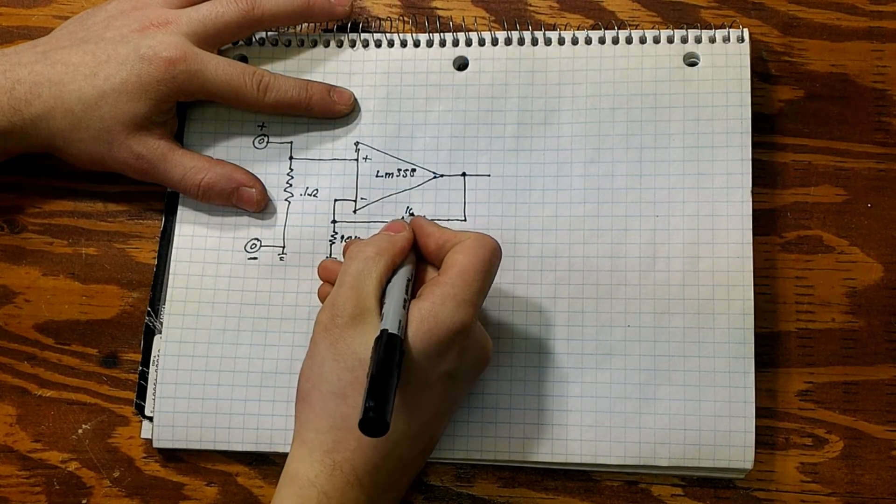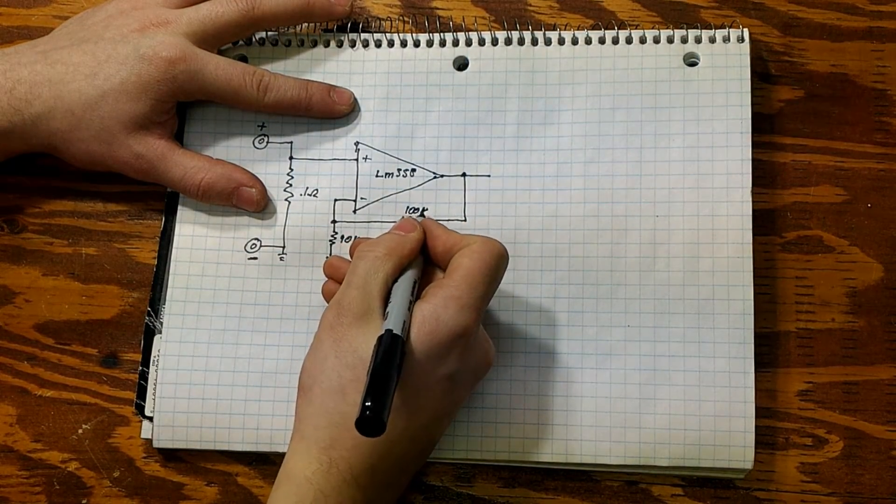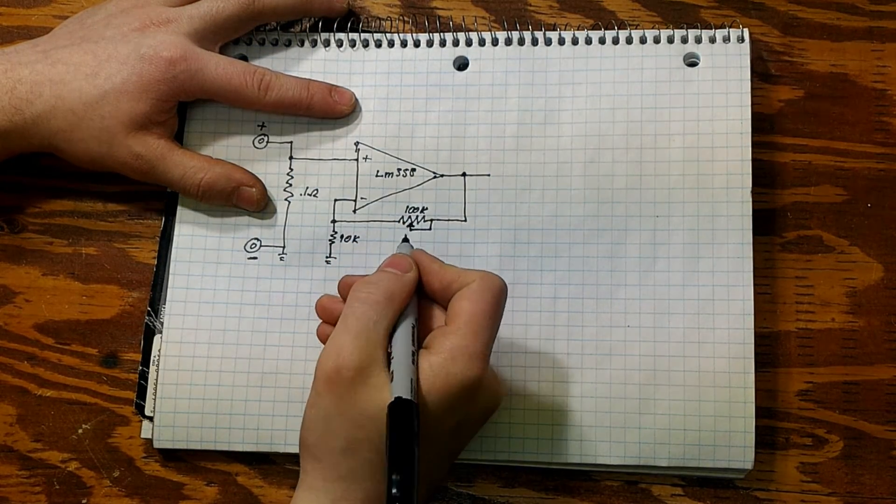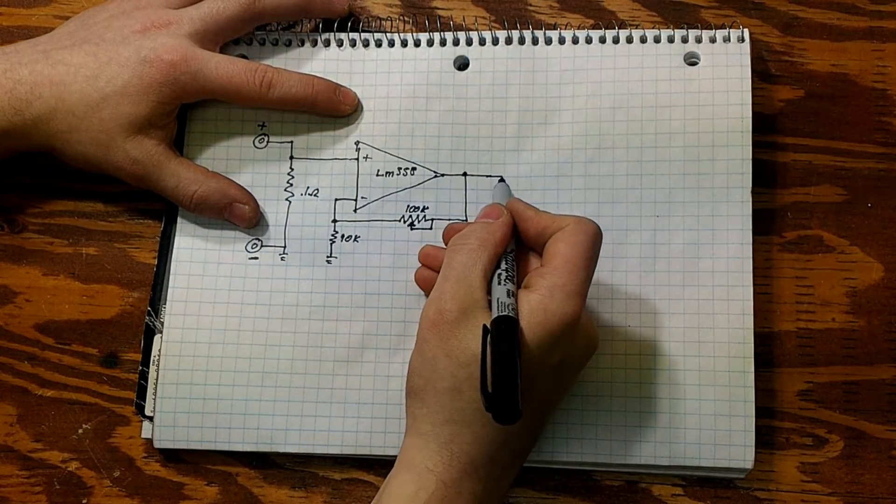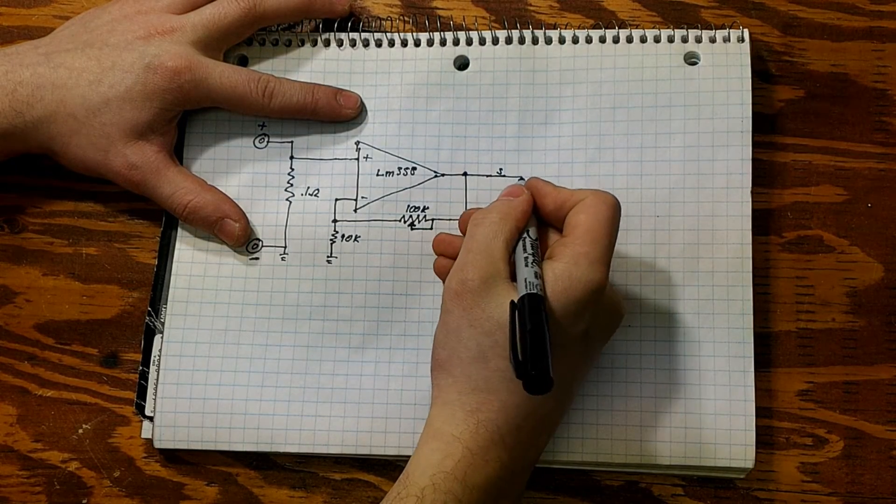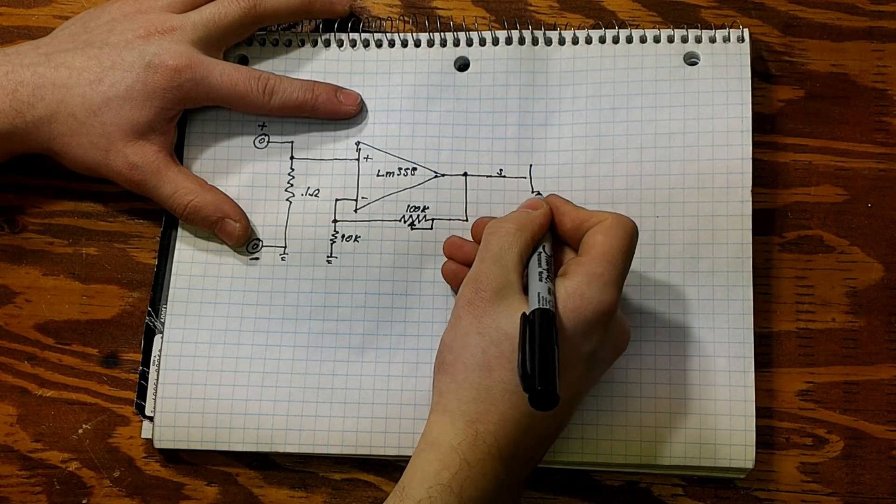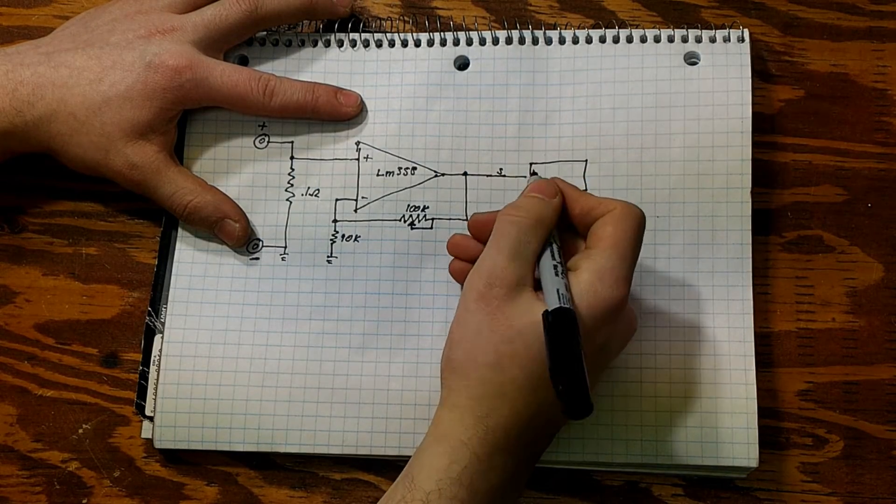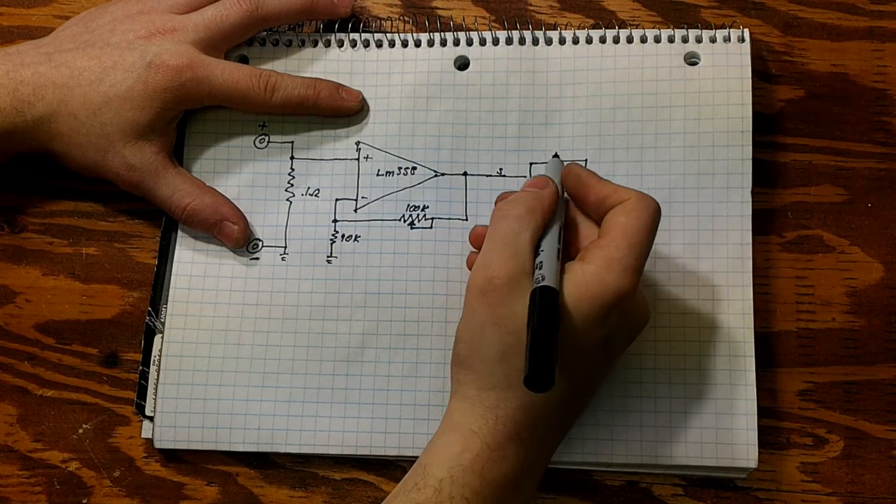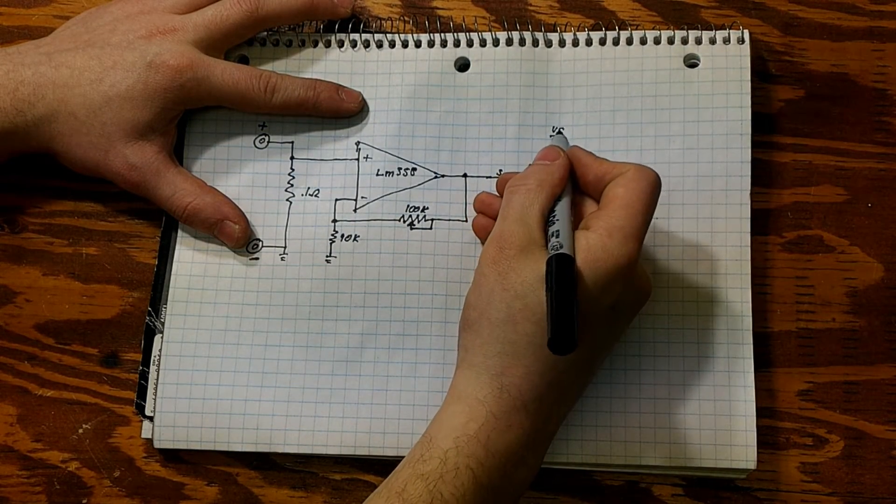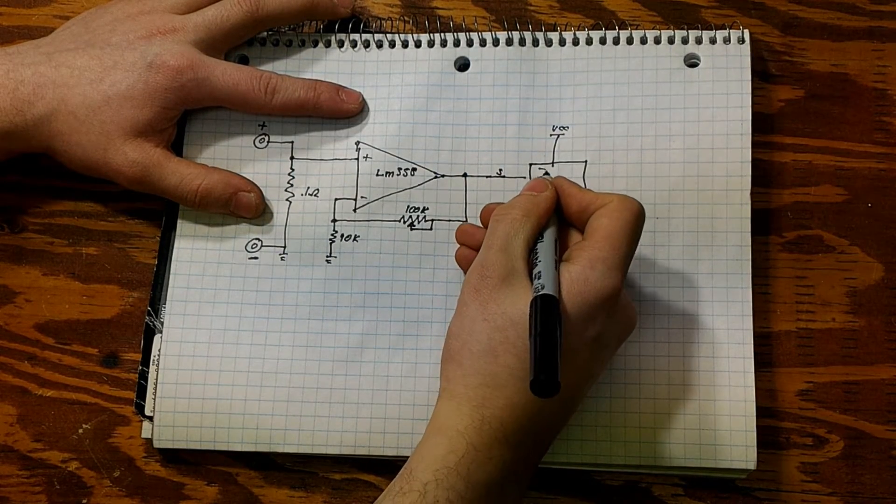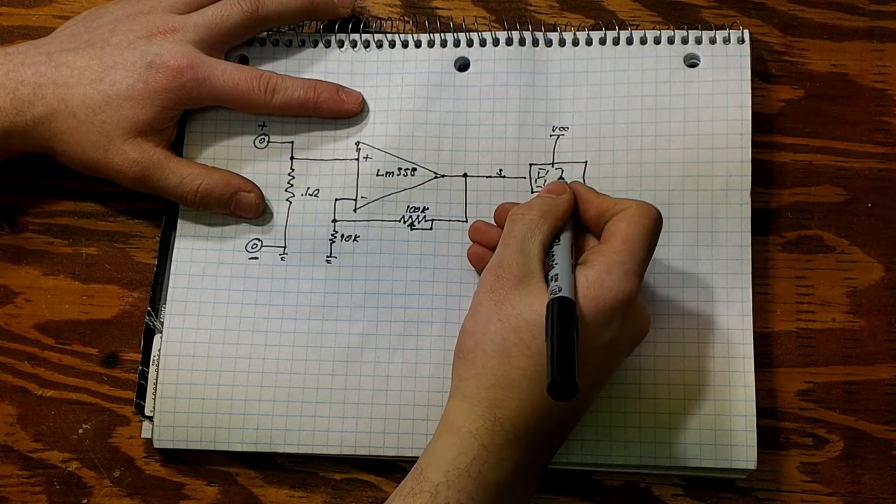And then the junction between the inverting input and the resistor is connected with a 100k resistor to our output and it is a variable resistor so we can calibrate our device. Now we have our output which is going to our DVM or digital voltmeter. The digital voltmeter is connected to the negative of the internal battery and positive of the internal battery as well as the op-amp, but it's not showing in the picture.